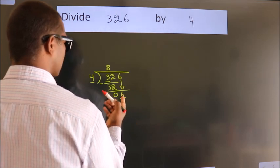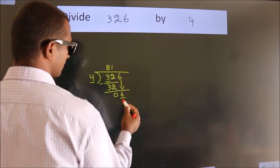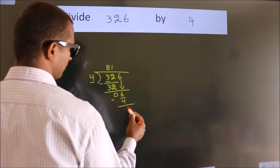A number close to 6 in 4 table is 4 1s, 4. Now we subtract. We get 2.